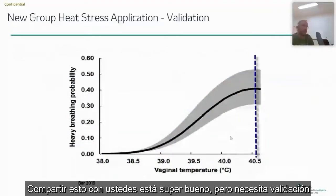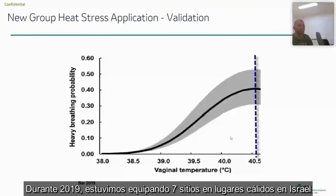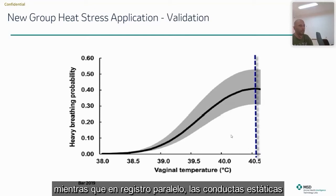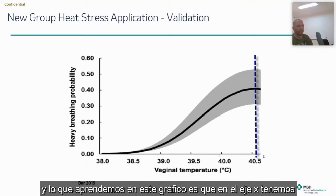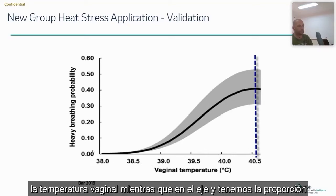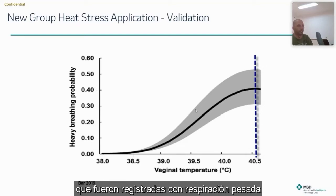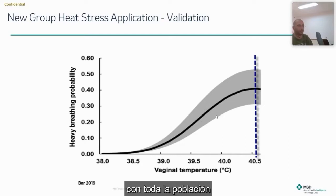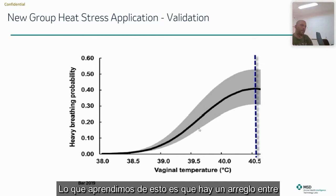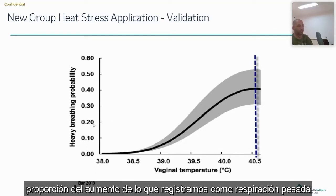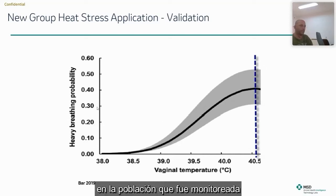This requires some validation. During 2019, we equipped several cows in warm locations in Israel with thermologgers as shown previously, while in parallel recording our behavioral states. From this graph, on the x-axis you have the average vaginal temperature per cow, while on the y-axis you have the proportion of cows within the population recorded with heavy breathing. The variability represents the difference around the average of the entire population. What we learn is that there is an agreement between the increase in vaginal — in that case core — temperature and the proportion of cows recorded with heavy breathing in the monitored population.